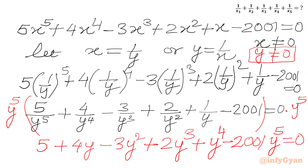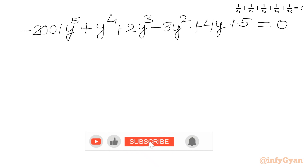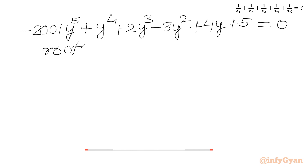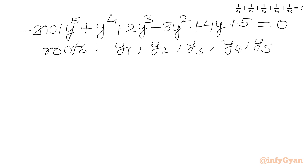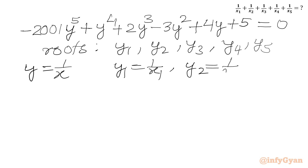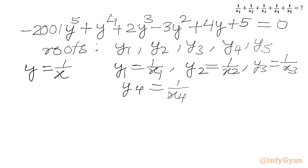Let us write this in the appropriate order with the leading coefficient first. The roots of this new quintic equation in y are y1, y2, y3, y4, and y5. Since y equals 1 over x, we have y1 equal to 1 over x1, y2 equal to 1 over x2, y3 equal to 1 over x3, y4 equal to 1 over x4, and y5 equal to 1 over x5.